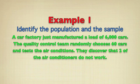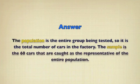They discover that two of the air conditions do not work. You need to find out the population and sample in this question. The population is the entire group being tested, so it's the total number of cars in the factory, which are 6,000 cars. The sample is the 60 cars randomly selected out of 6,000 cars, as a representation of the entire population.